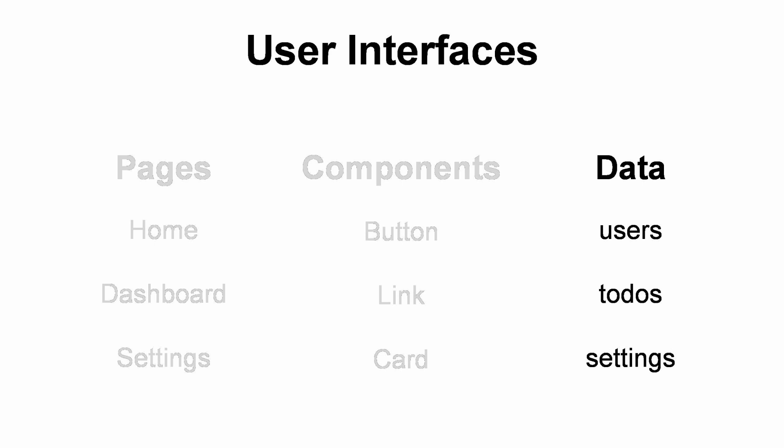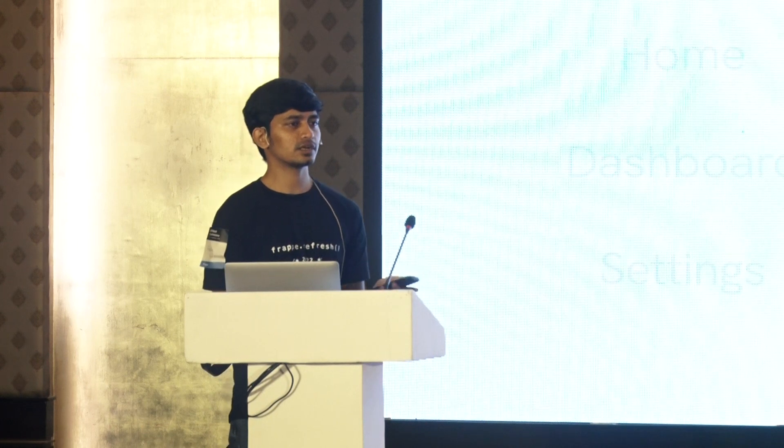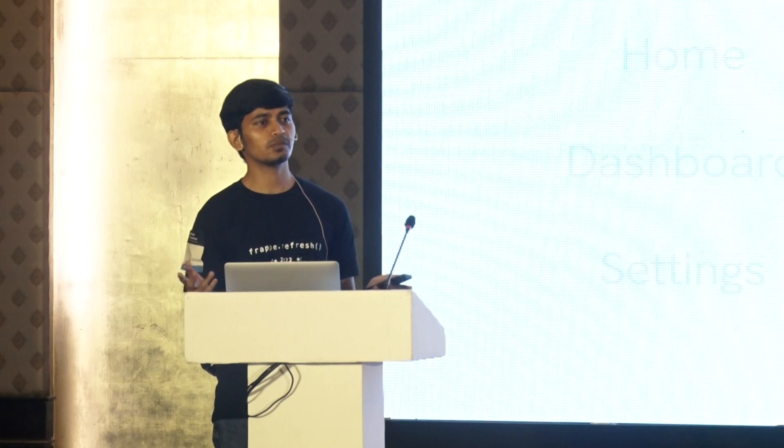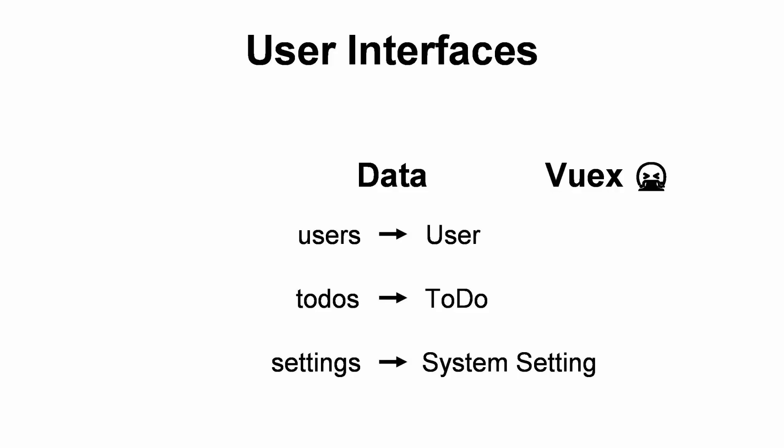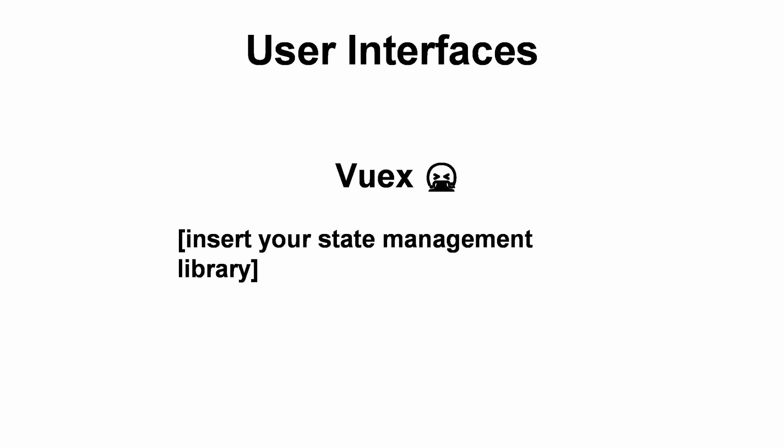I want to focus on data, because pages and components are more or less solved by things like client-side routers like Vue Router, and we have thousands of component libraries. But data is not — there's no really standard way or best practices for handling client-side data. Things like users come from the user doc type, to-dos from to-do doc type, and settings from system settings. In the Vue world we have Vuex, but I don't like the API. It's a state management library but it's not really built to handle async data fetching, and that is where the problem lies.